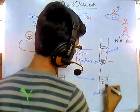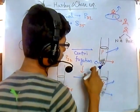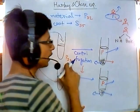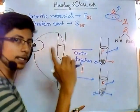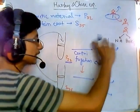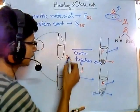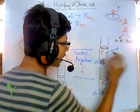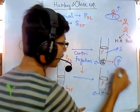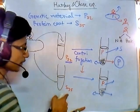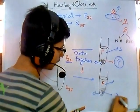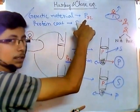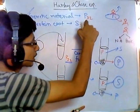They analyzed both the soup and the pellet from both tubes. In the tube labeled with P32 — which tagged the genetic material — they found the radioactivity was coming from the pellet. In the tube labeled with S35 — which tagged the protein coat — they found the radioactivity was coming from the supernatant. So when tagging genetic material with P32, radioactivity was detected in the pellet.